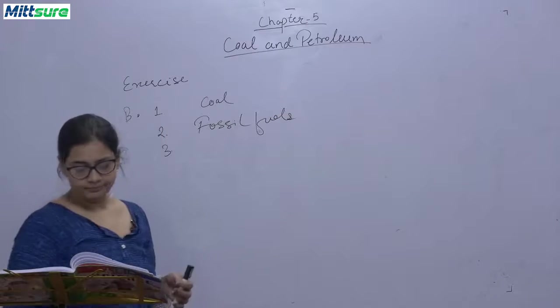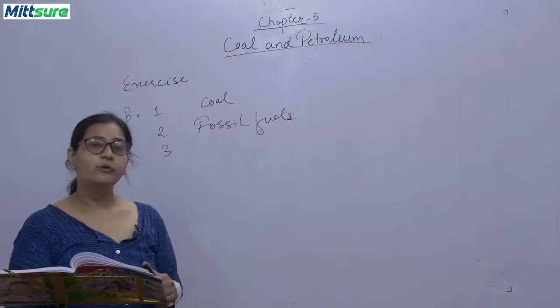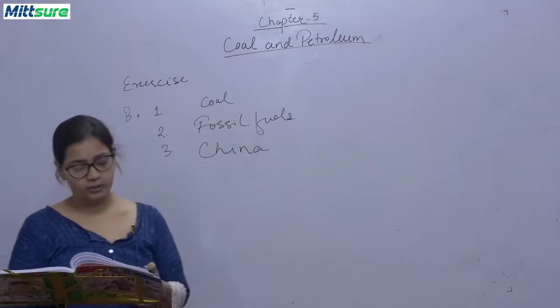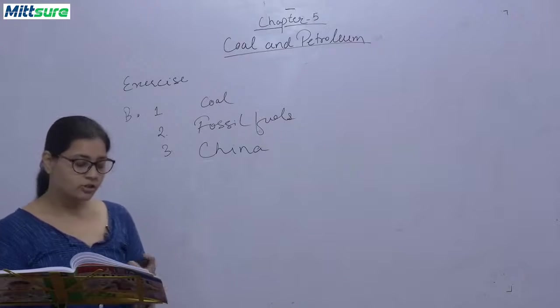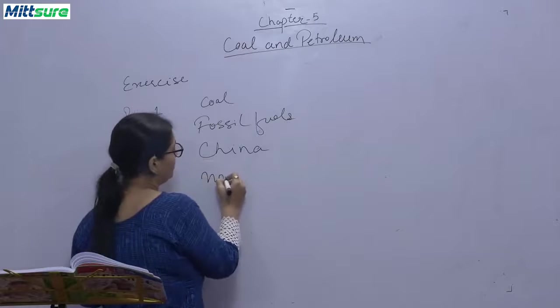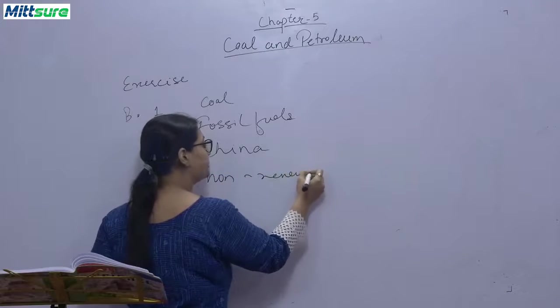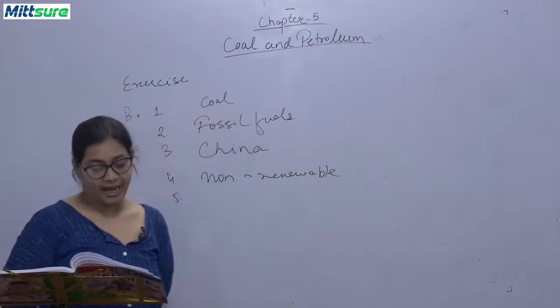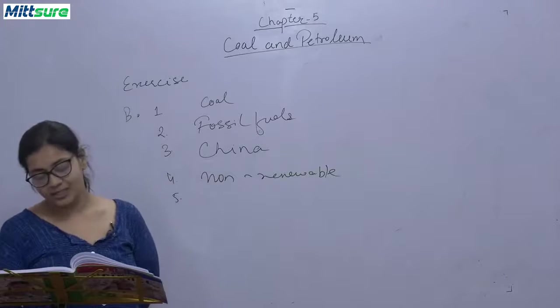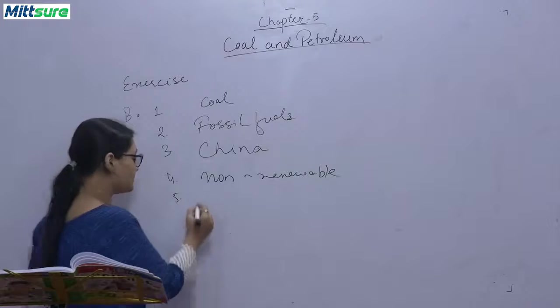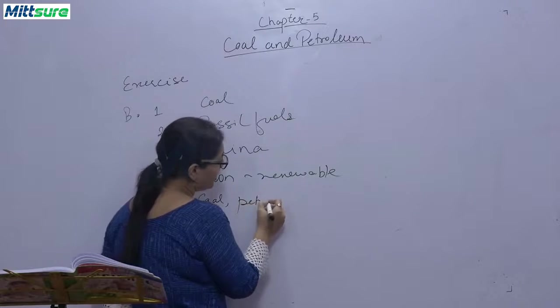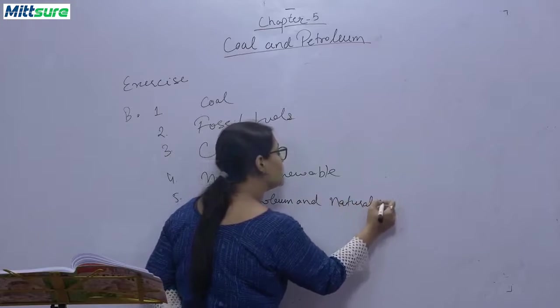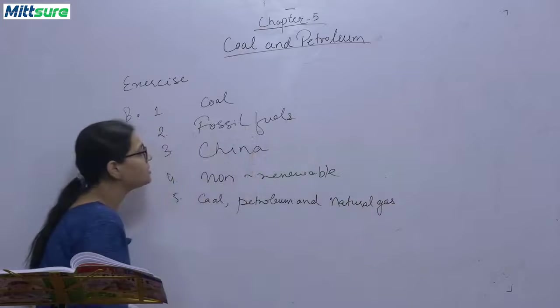Third, China is the largest producer of coal in the world. Fourth, coal is a non-renewable energy source. The fifth is coal, petroleum, and natural gas are formed from fossils and hence are called fossil fuels.